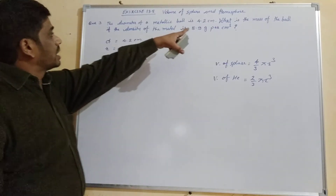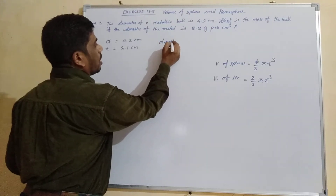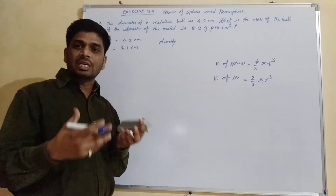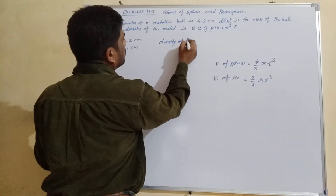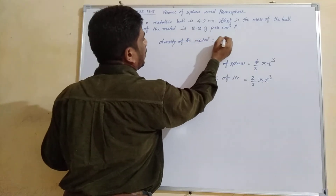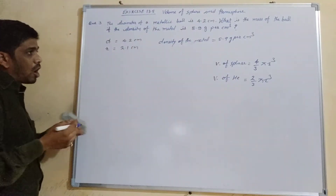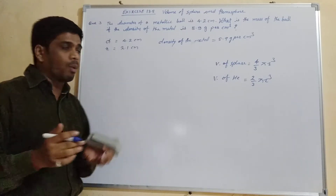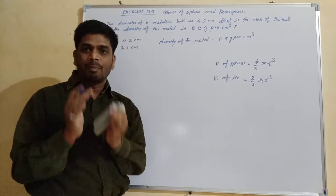The density of the metal is given. To find the mass, we require the density. If we multiply the volume with the density, we will get the mass. The density of the metal is 8.9 gram per cubic centimeter. So to find the mass, we first need the volume of the metallic ball.